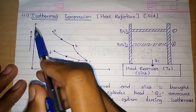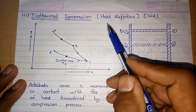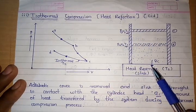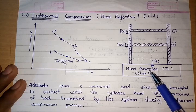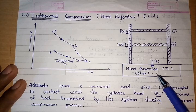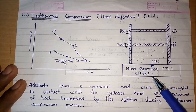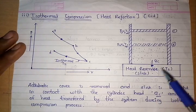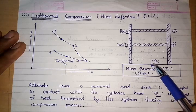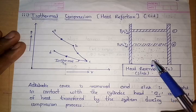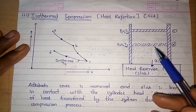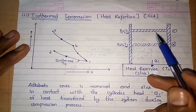The third process in the Carnot cycle is isothermal compression, in which heat rejection takes place. During this process, the insulating cover is removed from the cylinder head and the low-temperature heat reservoir acting as a sink is brought into contact with the cylinder head. Since the sink temperature is lower than the gas temperature, heat starts transferring from the gas to the reservoir — QC amount of heat is transferred. Because heat is rejected, the gas temperature starts decreasing, volume decreases, and the piston moves from C to D.